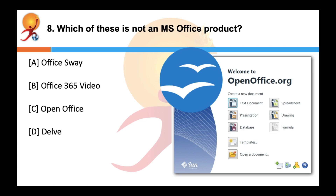Which of these is not an MS Office product? The correct answer is C — OpenOffice is a discontinued open-source office suite, something similar to Microsoft Office. Sun Microsystems open-sourced the OpenOffice software in July 2000 as a competitor to MS Office.